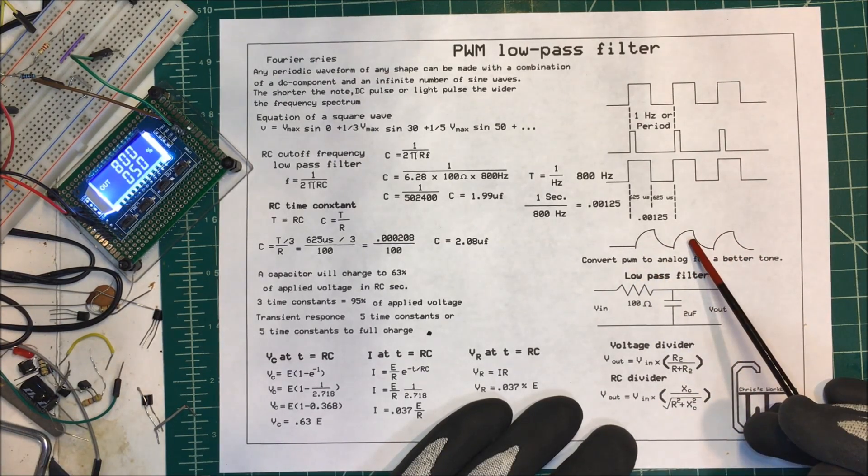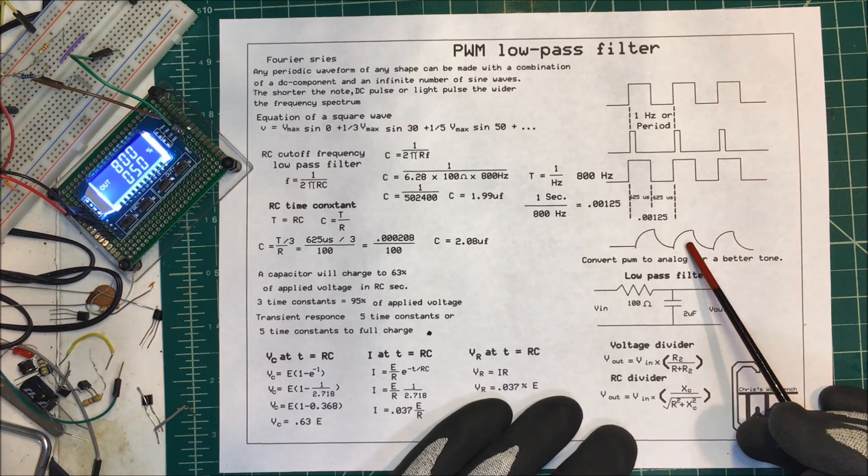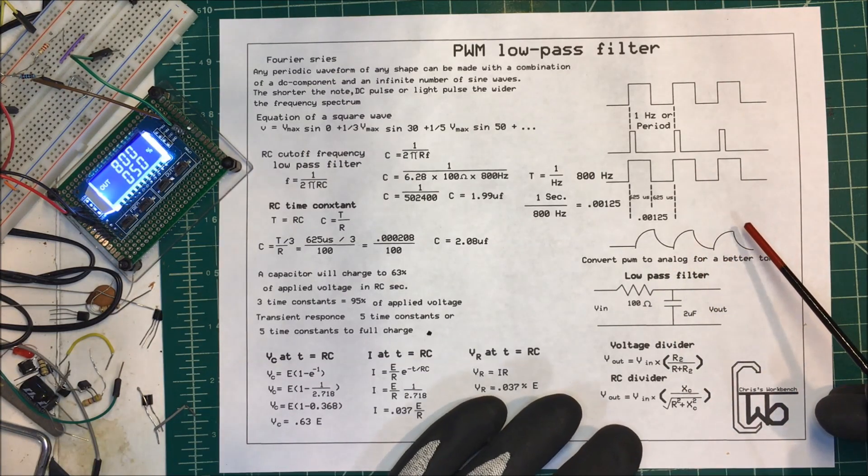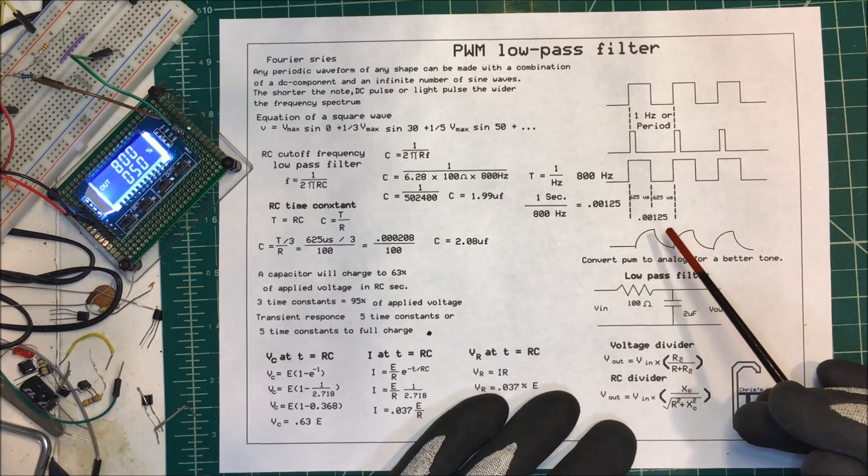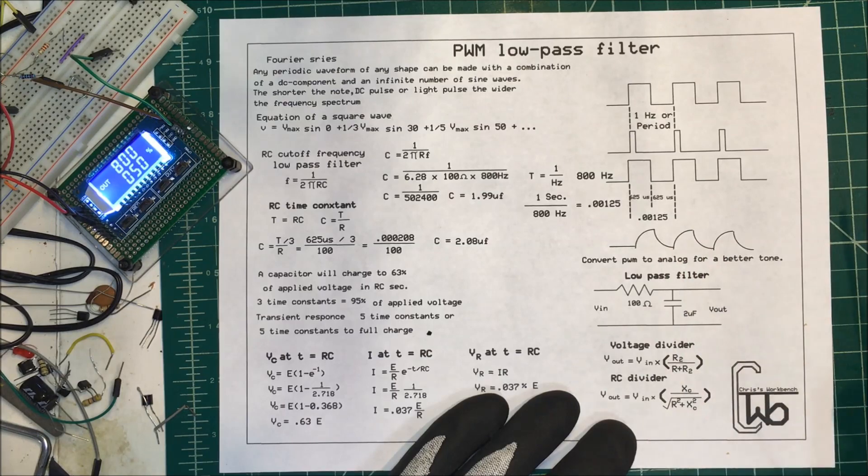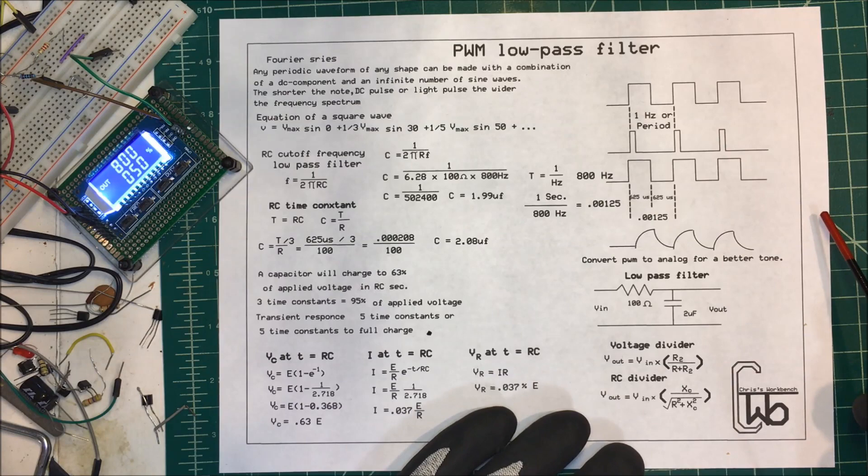On my last project I used 800 Hz to make a CW tone or Morse code tone. And if I put it into more of a sine wave, I think it'll sound better. We'll try it at the end of the video and I'll show you the difference.